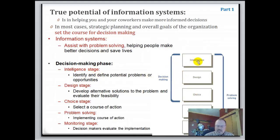The intelligence stage at the beginning identifies and defines potential problems or opportunities. The design stage develops alternative solutions to the problem and evaluates their feasibility. The choice stage selects a course of action. Problem solving is actually implementation — you implement that particular choice, then monitor it to see if the feedback supports the decision. If it doesn't, you go back to the beginning and make new decisions.